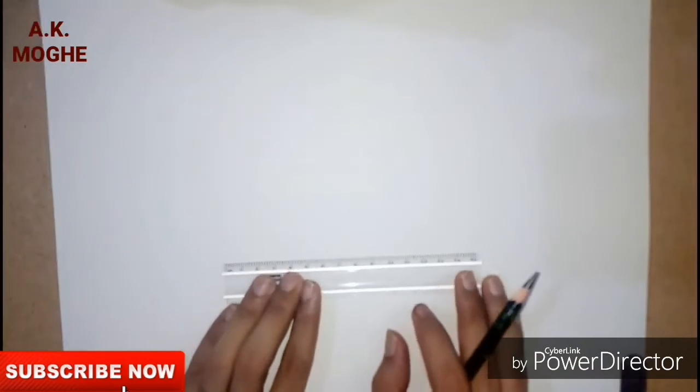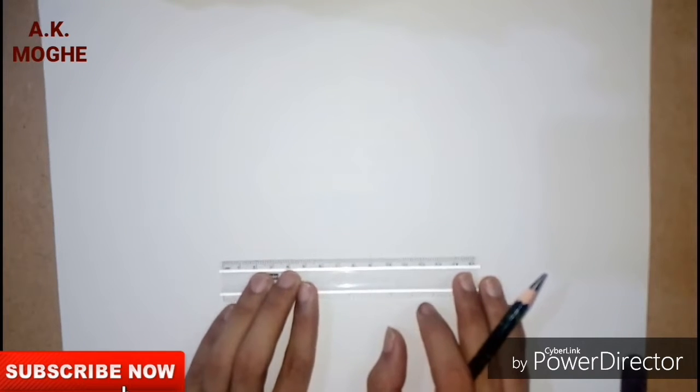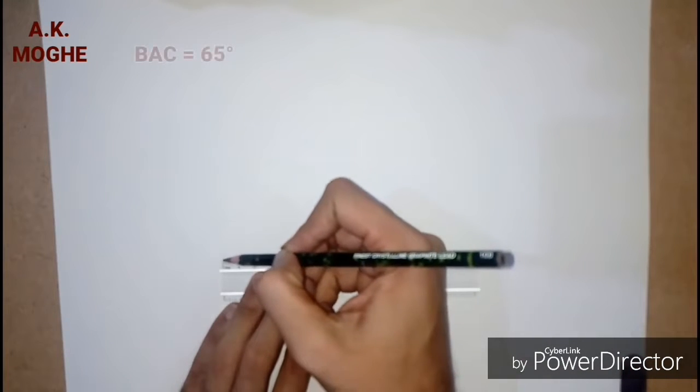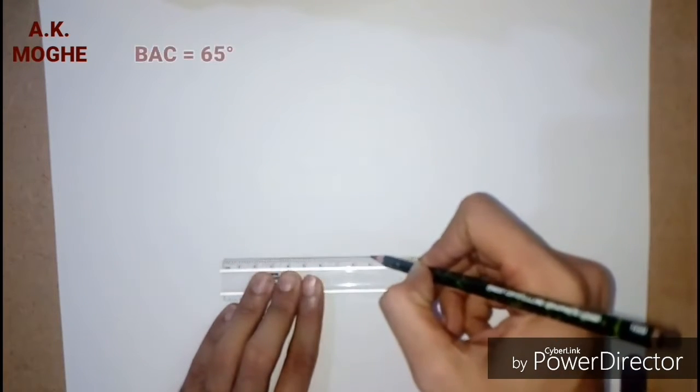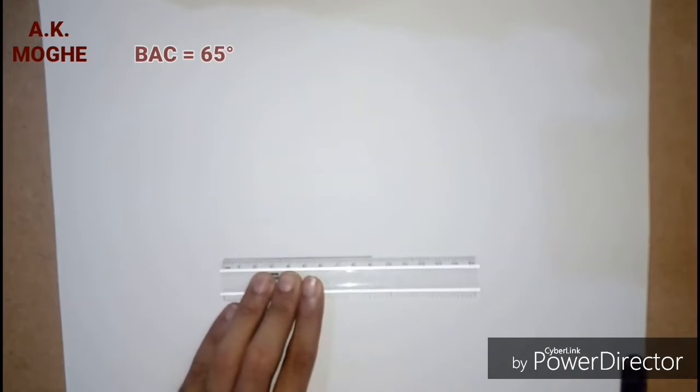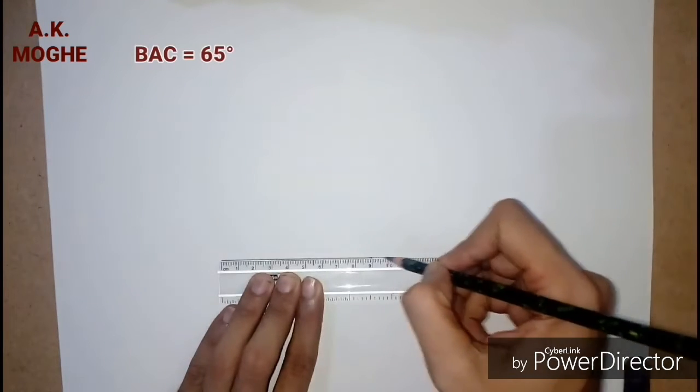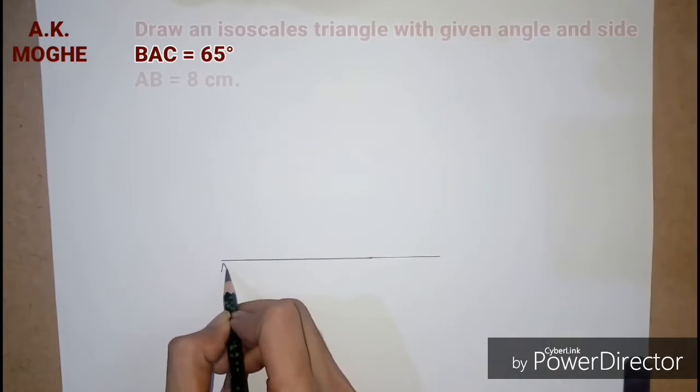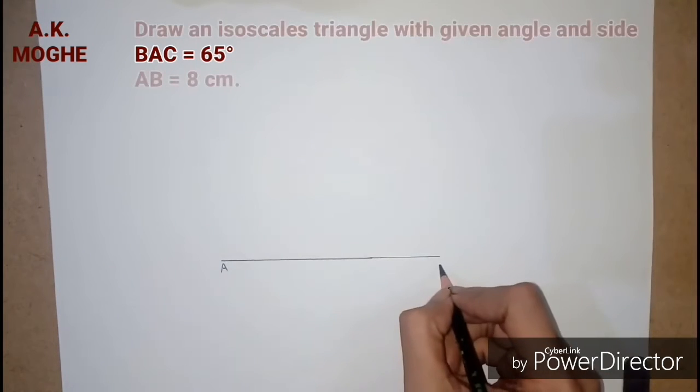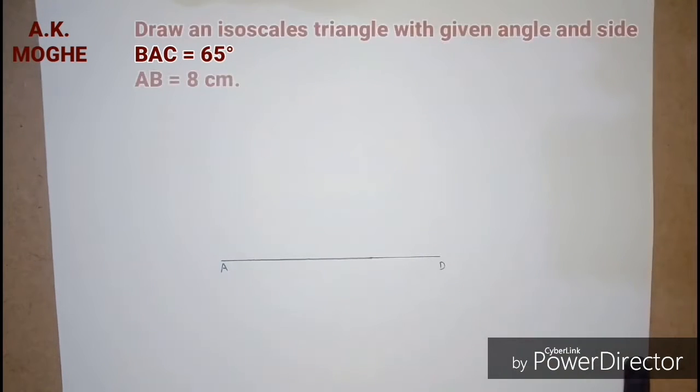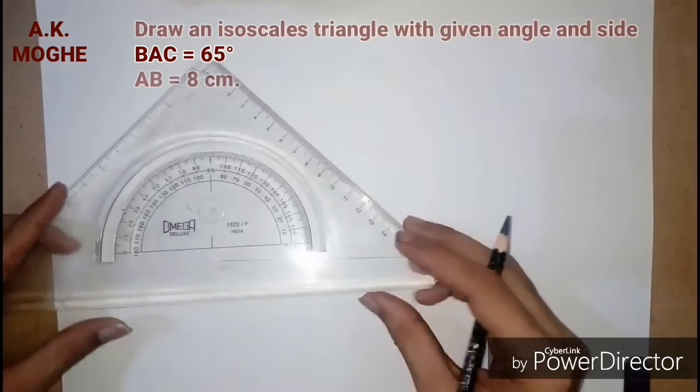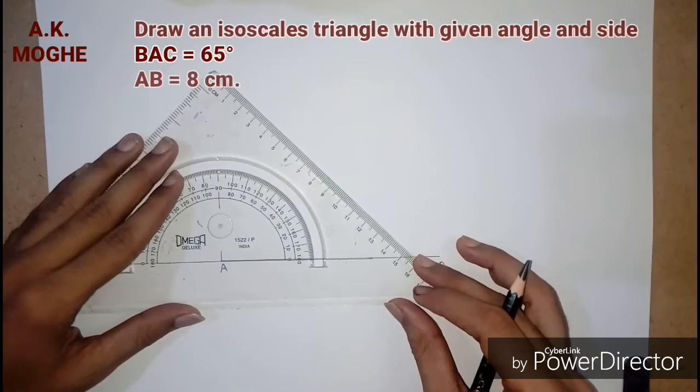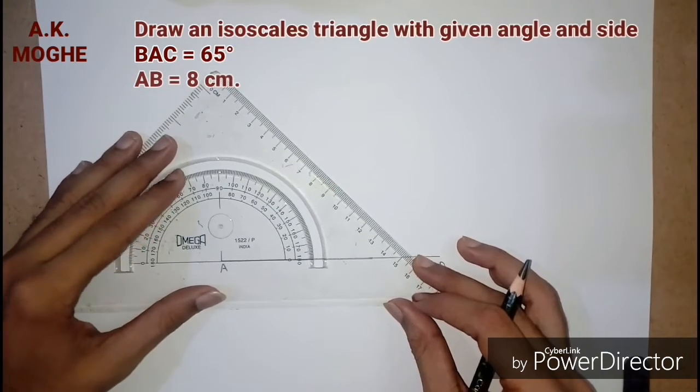The second problem is how to draw an isosceles triangle with an angle of 65 degrees. Draw line AB of 8 centimeter. Mark an angle BAC 65 degrees at point A.